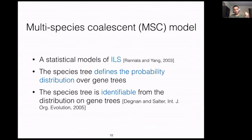How do we model incomplete lineage sorting? We use the multi-species coalescent model, a statistical model of ILS that connects traditional population genetics with phylogenetics. The species tree defines the probability distribution over gene trees. Based on this model, the species tree is identifiable from the distribution on gene trees, meaning as the number of true gene trees goes to infinity, we are able to infer the true species tree with probability one.